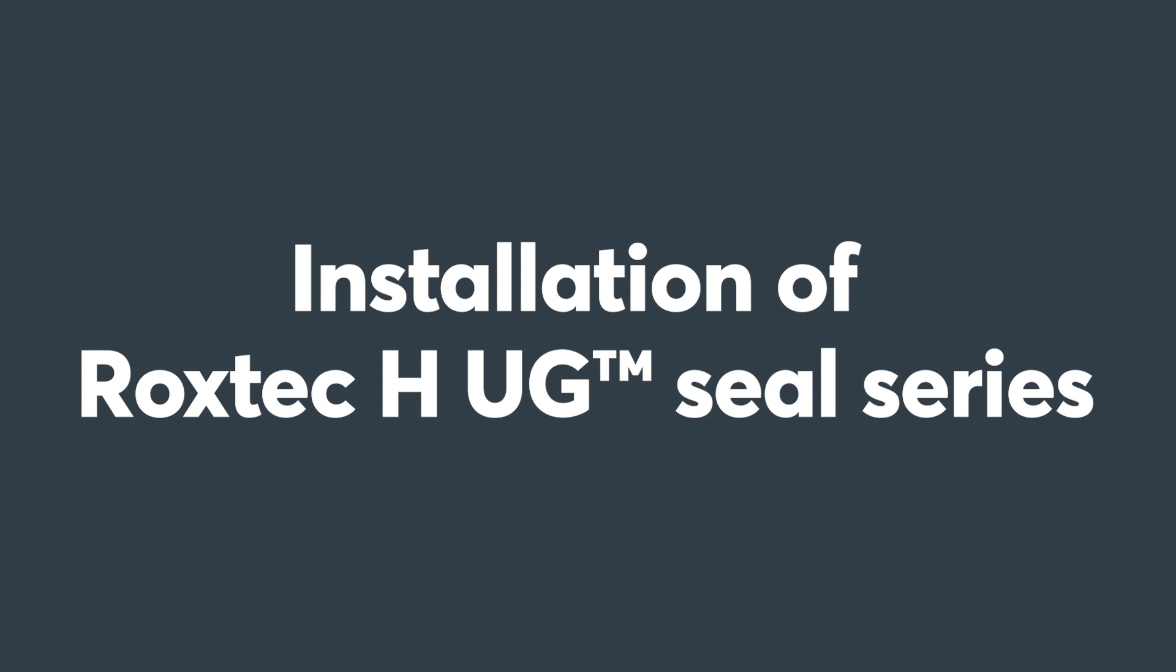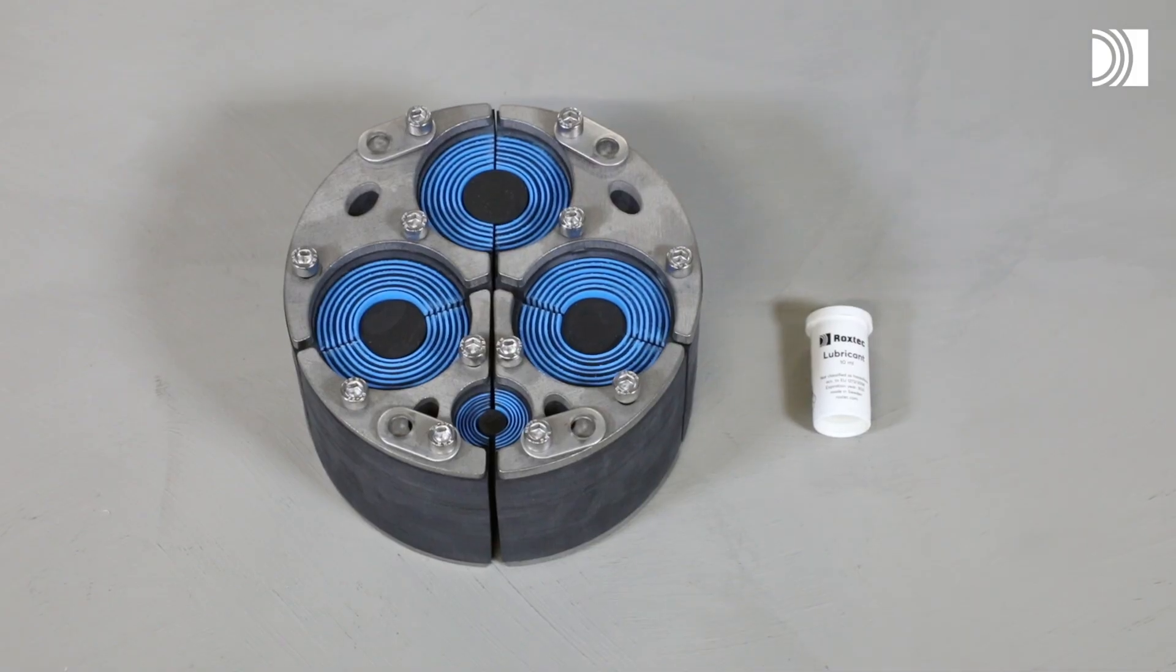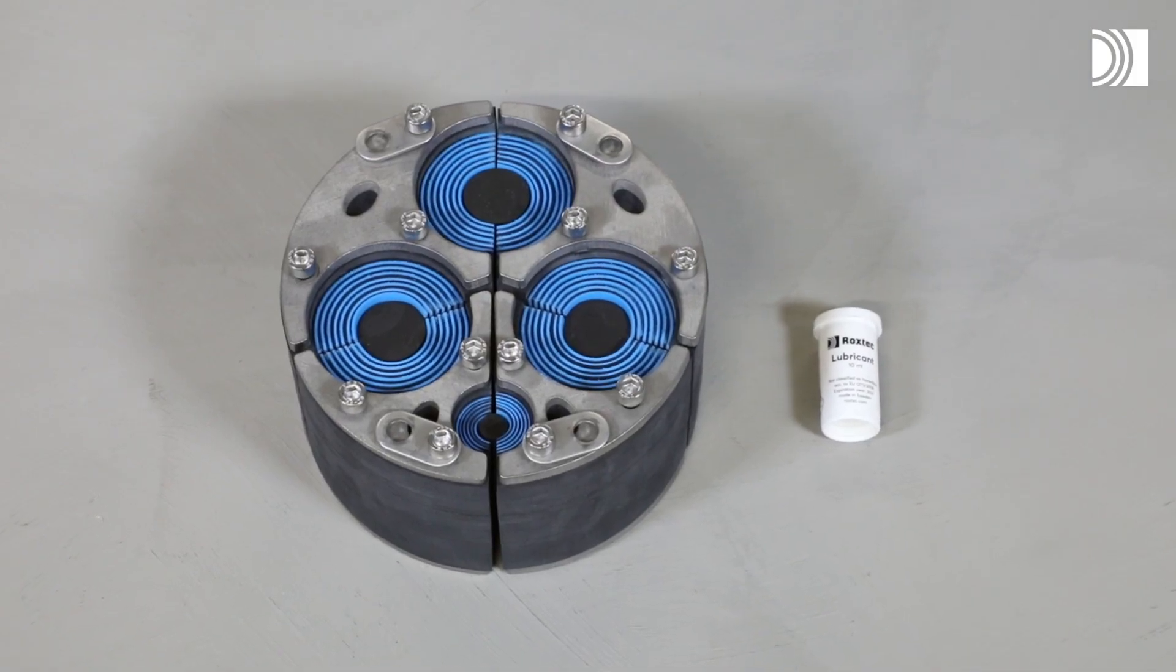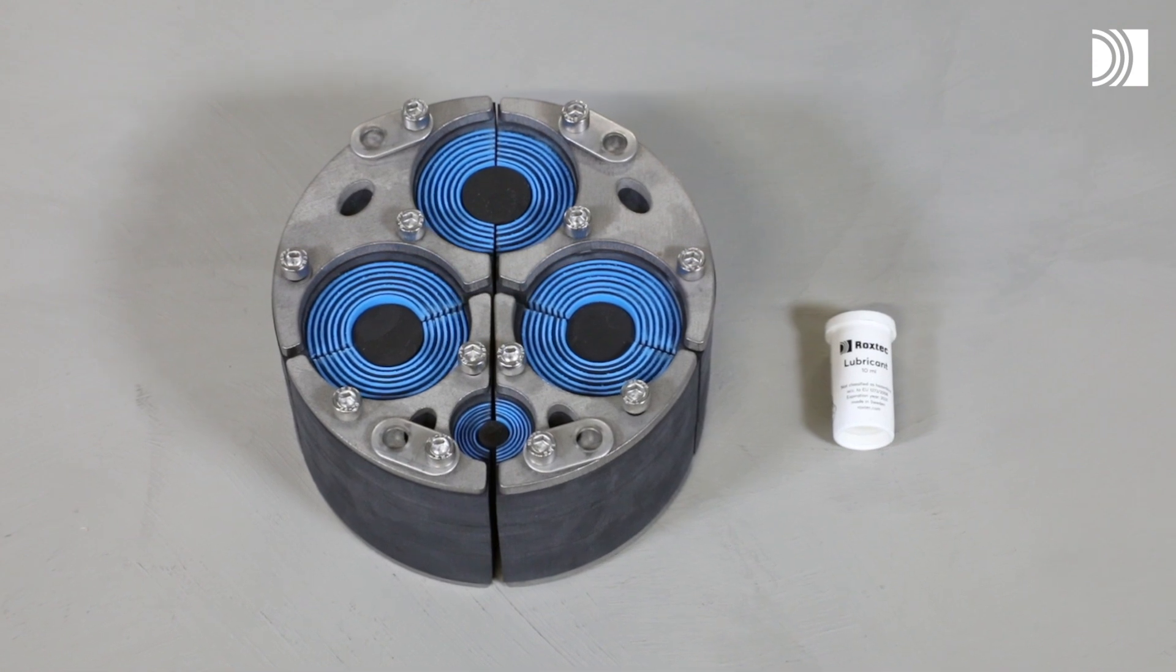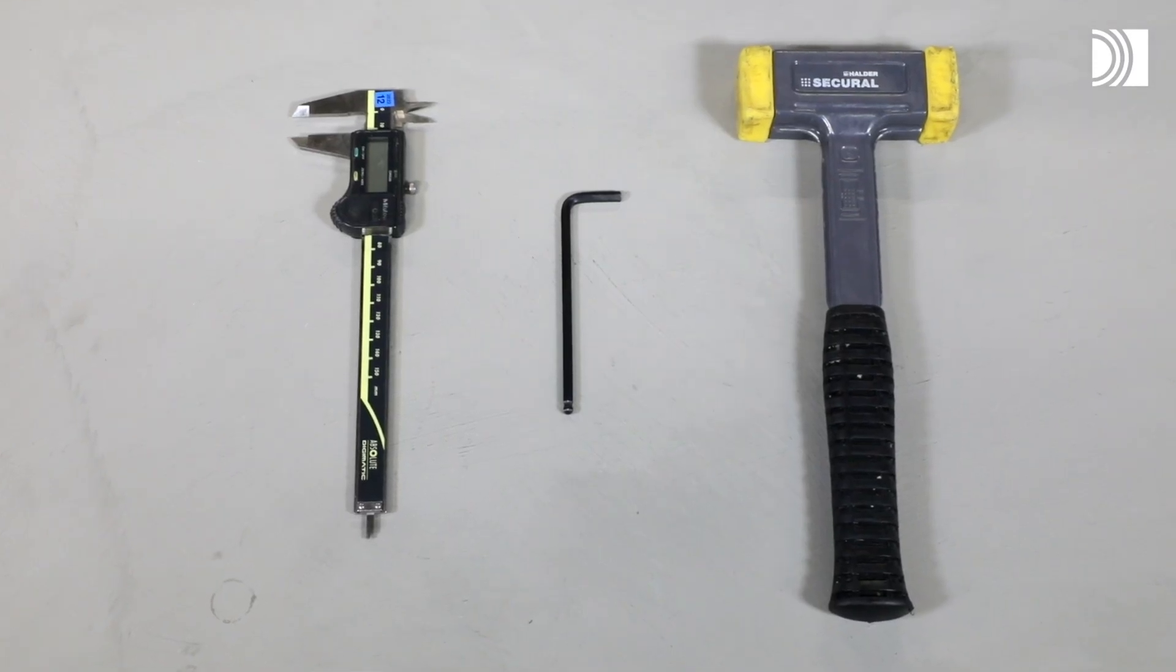Installation of Roxtec HUG Seal Series. To install a Roxtec HUG Seal, you need the Roxtec HUG Seal and Roxtec Lubricant, as well as a caliper, an allen key, and a hammer.